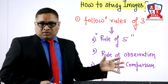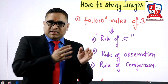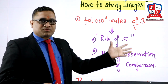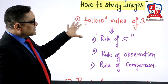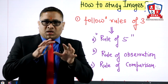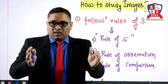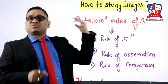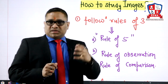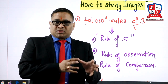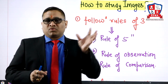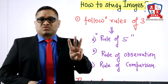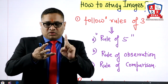Whenever we are seeing any image, number one point we should remember: we will never panic, whether it is exam time or self-study time. There are three important things regarding this approach. Number one, as I have written here, you can see — follow the Rule of Three. Whenever you are seeing any image, whatever should come to your mind, it should be the Rule of Three. Rule of Three means there are three things to follow when seeing any image in our exam, whether it is a histopathology image or a hematology image. You should follow three rules: Rule of Five, Rule of Observation, and Rule of Comparison.